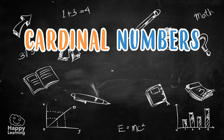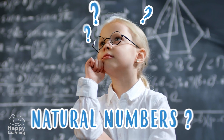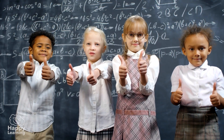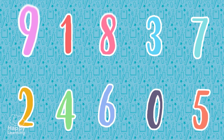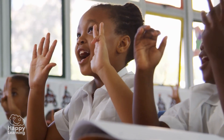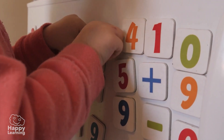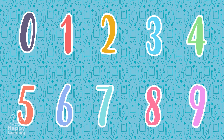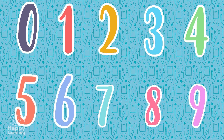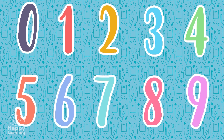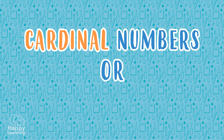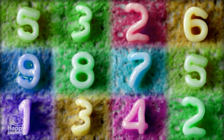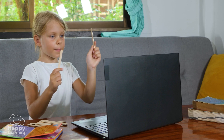Cardinal numbers and ordinal numbers. Do you remember what natural numbers are? Natural numbers are all numbers — the ones we use to count, to add, to subtract, to do mathematical calculations, and also to put things in order. Depending on how we use them, we call these natural numbers cardinal numbers or ordinal numbers. Cardinal numbers are the ones we use to count or to do accounts.